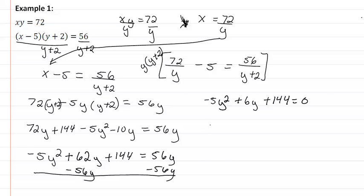So we're going to get that y equals negative 6 plus or minus the square root of 6 squared minus 4 times our negative 5 times our 144 all over 2 times our negative 5.